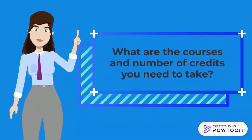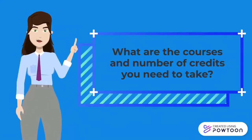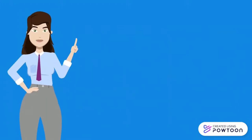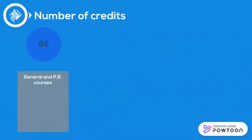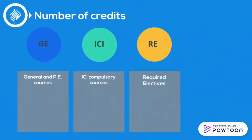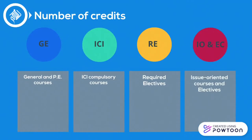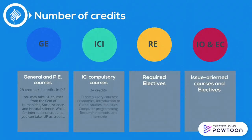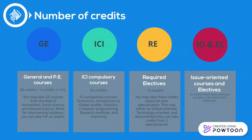First thing you need to know is what are the courses and number of credits you need to take. You will need a minimum of 128 credits in order to graduate. For general and PE courses, 28 credits plus 4 credits in PE. For ICI compulsory courses, 24 credits. For required electives, 15 credits. For issue organic courses and electives, 12 credits plus 45 credits from electives.